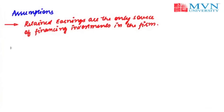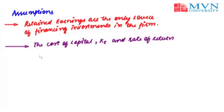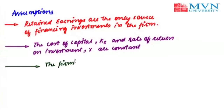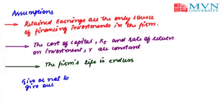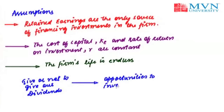The second important assumption of the Walter approach is that the cost of capital, denoted by Ke, and the rate of return on investment, denoted by R, are constant. That is, even if new investment decisions are taken by the firm, the risk of the business remains the same. The third assumption is that the firm's life is endless — there is no closing down of the firm. According to Walter, the firm's decision to pay or not pay dividends depends on whether it has enough opportunities to invest the retained earnings, indicating a strong relationship between investment and dividend decisions.